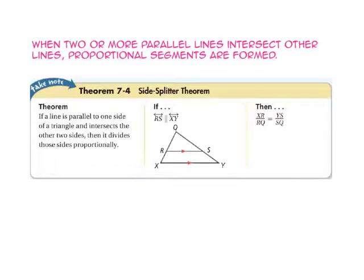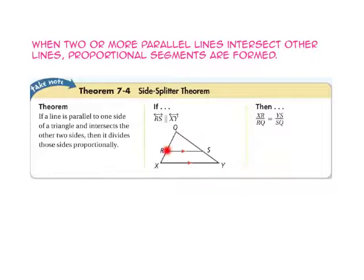If a line is parallel to one side of a triangle and intersects the other two sides, then it divides those sides proportionally. Since segment RS is parallel to the base of triangle QXY, it creates proportional sides. So the length of segment XR to the length of segment RQ is equal to the length of segment YS to the length of segment SQ.